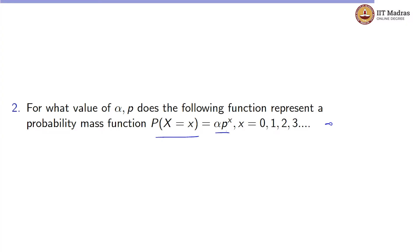So what are the conditions for this to be a valid PMF? The first condition is that for each x = 0, 1, 2, 3, and so on, the value should be greater than 0. If you put x = 0, it equals alpha, so alpha should be greater than 0. If you put x = 1, it equals alpha times p, so alpha·p should also be greater than 0.